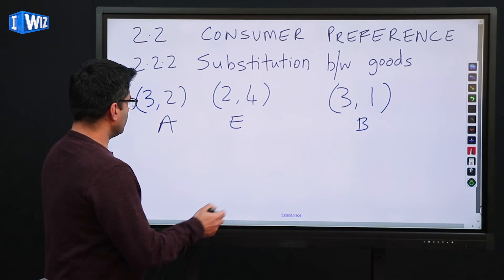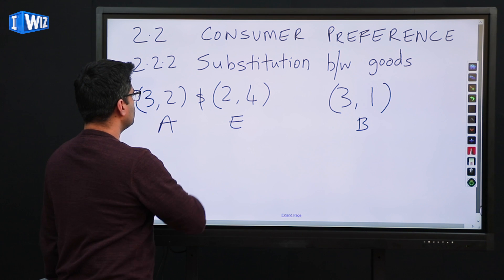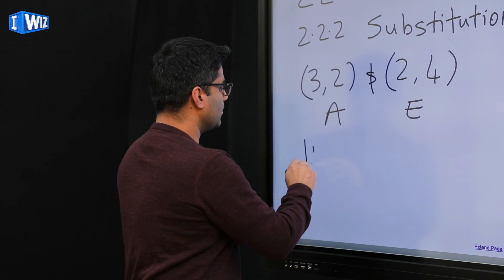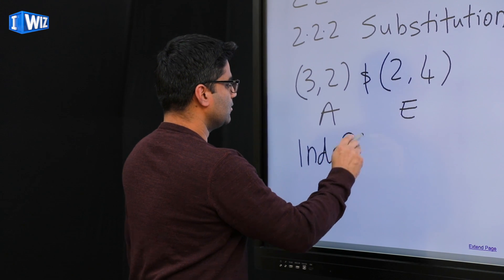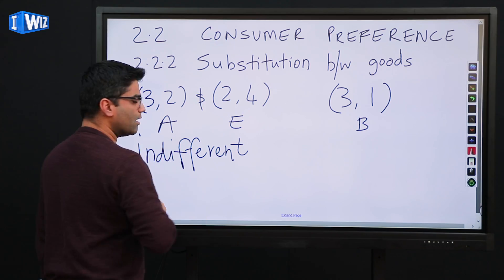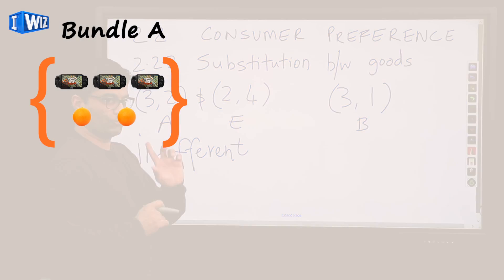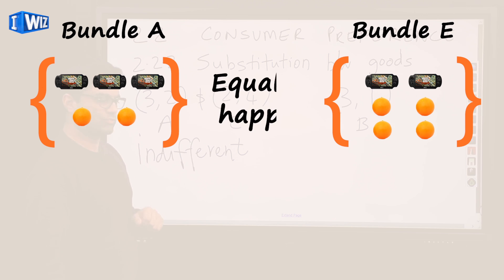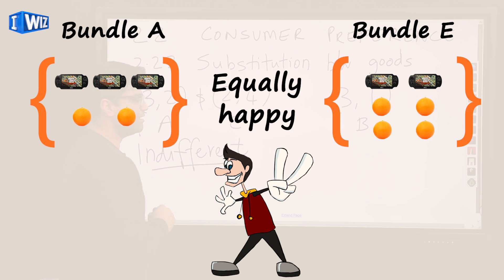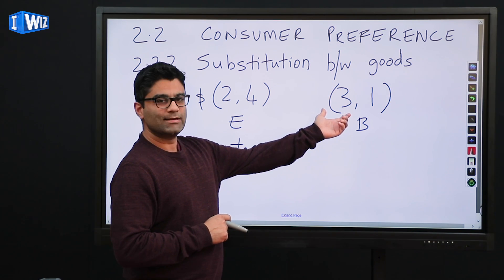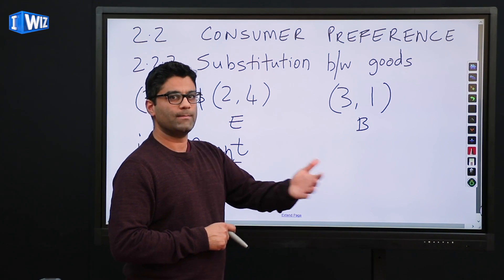Getting back to the question from last class — if you look at these two bundles A and E — what we say now is that if you are indifferent between two bundles, bundle A and bundle E give you an equal level of happiness. You're equally happy when you are indifferent between two bundles, as opposed to monotonic preferences where you can clearly rank one bundle to be better than the other.